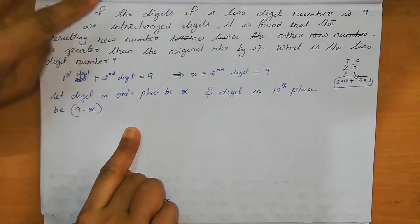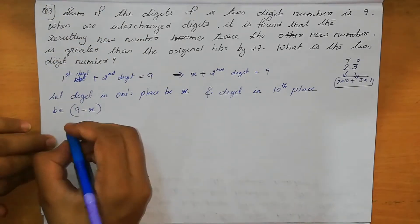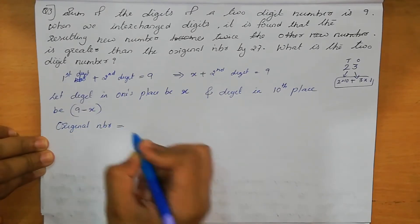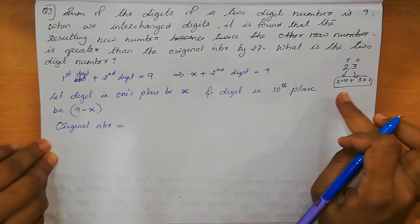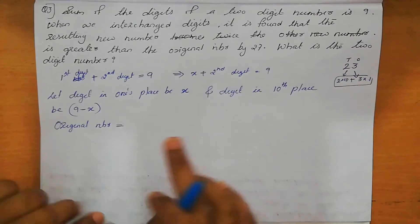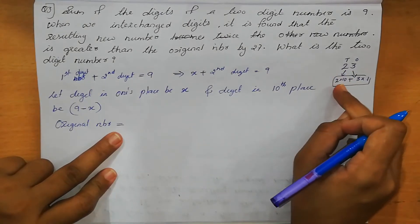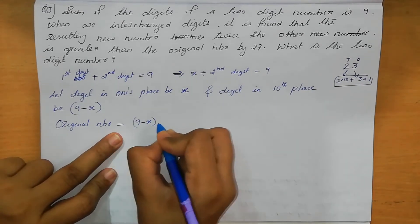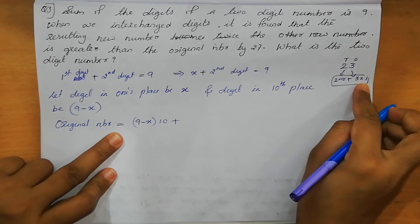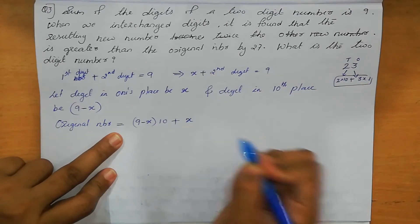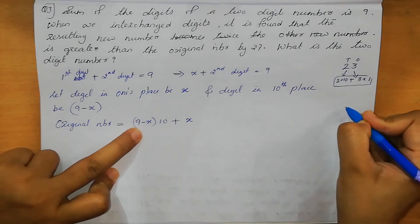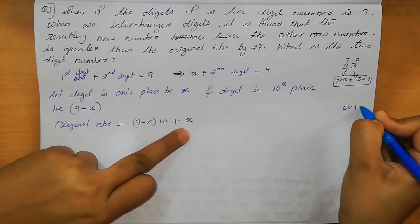When we interchange the digits it is found that the resulting new number is greater. First write the original number: digit in 10th place into 10 plus digit in 1's place, that is 9 minus X into 10 plus X. For example, taking 6 in 10th place: 6 into 10 is 60, plus 1 in 1's place gives 61. This is how we express a 2-digit number.